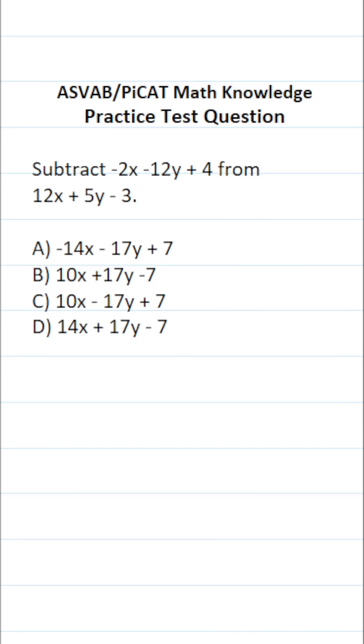This math knowledge practice test question for the ASVAB and PICAT says subtract negative 2x minus 12y plus 4 from 12x plus 5y minus 3. So what we're being asked to do is subtract this polynomial from this polynomial.